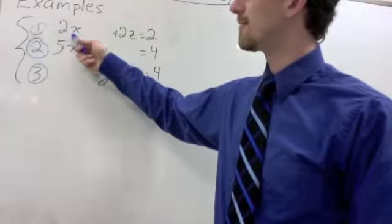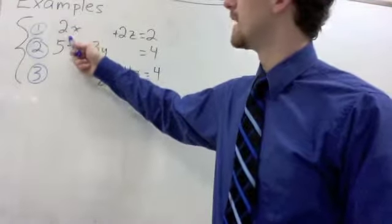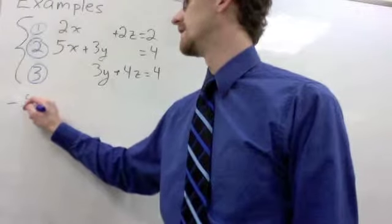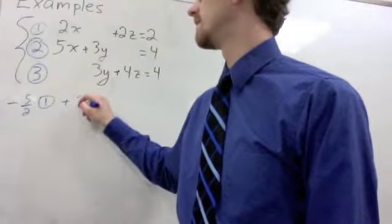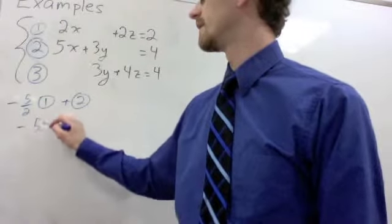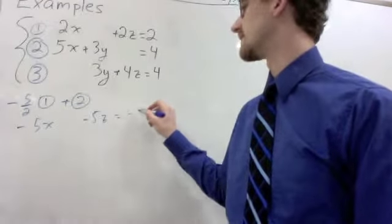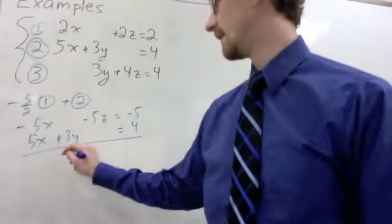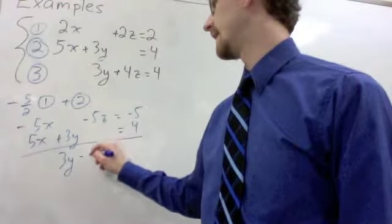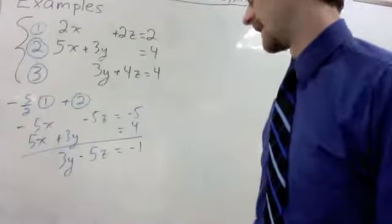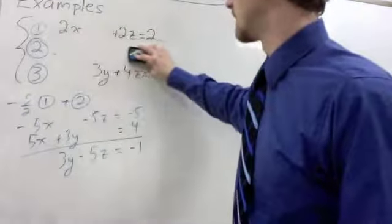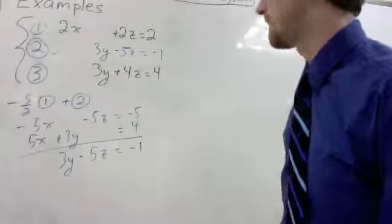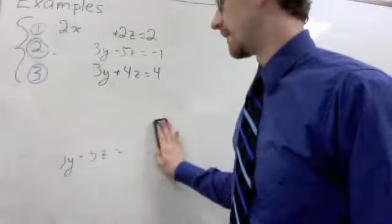First step is still to get rid of that x in our second equation. And we can do that by multiplying our first equation by negative 5 halves. Which seems mean, but all three of these are 2's, which means we'll get an integer result when we multiply by 5 halves anyway. So, take negative 5 halves times equation 1 plus equation 2. So that's negative 5x minus 5z equals negative 5 plus 5x plus 3y equals 4. Adding those together gets us 3y minus 5z equals negative 1. We can replace our second equation with that. 3y minus 5z equals negative 1.